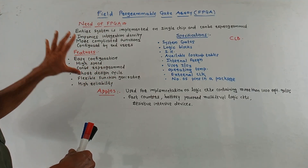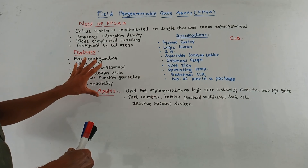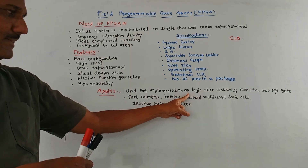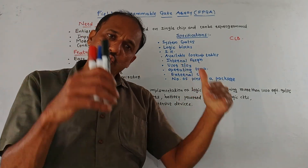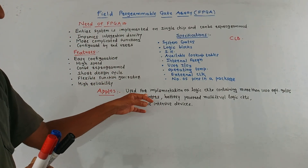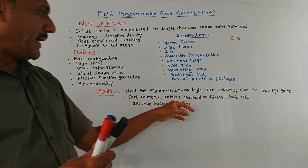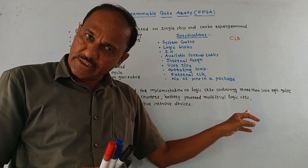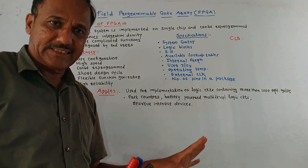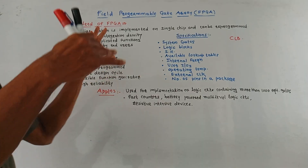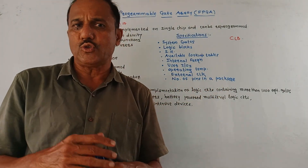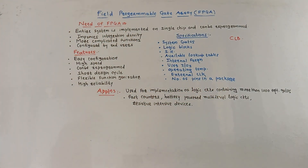Applications of FPGA: basically FPGA is used for implementation of logical circuitries which contain more than 1000 equivalent logical gates. Major applications include designing of fast counters, battery powered multilevel logical circuitries, and resistive intensive devices. That's it for today's session. Thank you for watching this video.